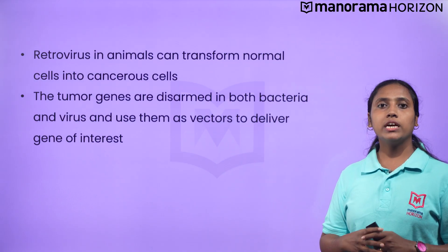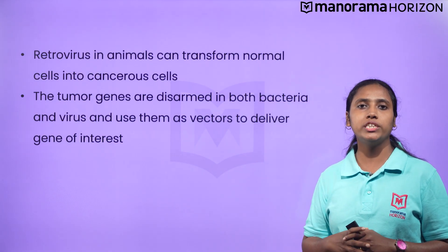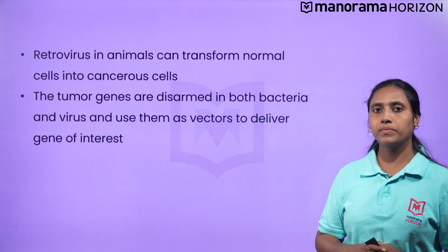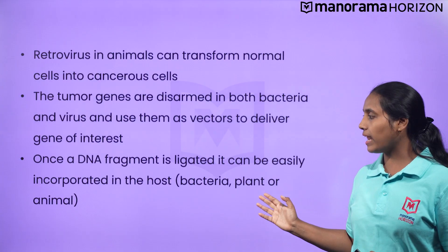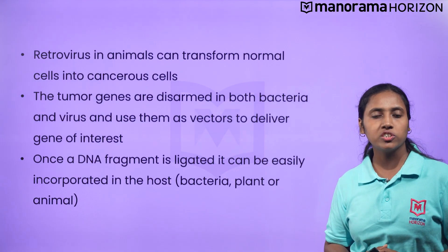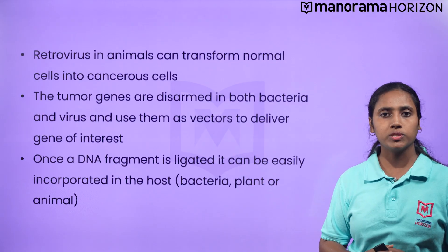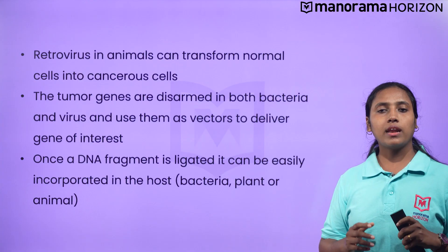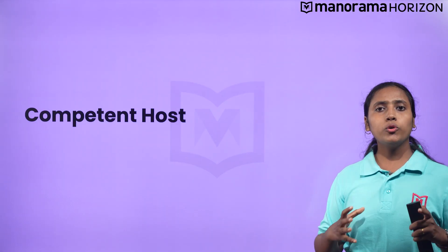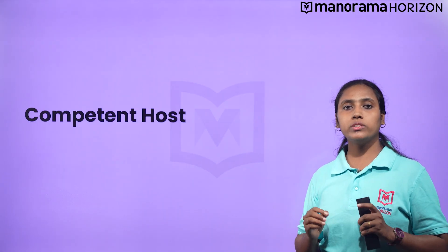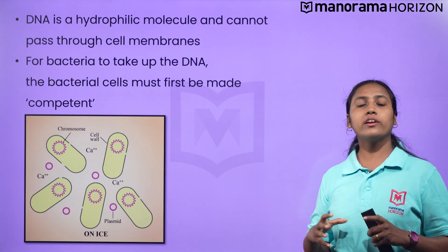Similarly, retroviruses have also been disarmed and are now used to deliver desirable genes into animal cells. Once a gene or DNA fragment has been ligated into a suitable vector, it is transferred into a bacterial, plant, or animal host. The last tool of recombinant DNA technology is the competent host. DNA is a hydrophilic molecule and cannot pass through the cell membrane, so the bacterial cells must first be made competent to take up the DNA.